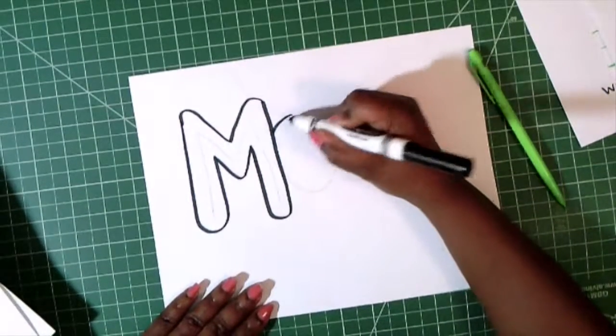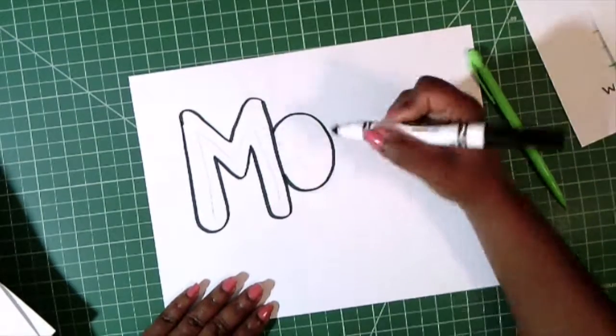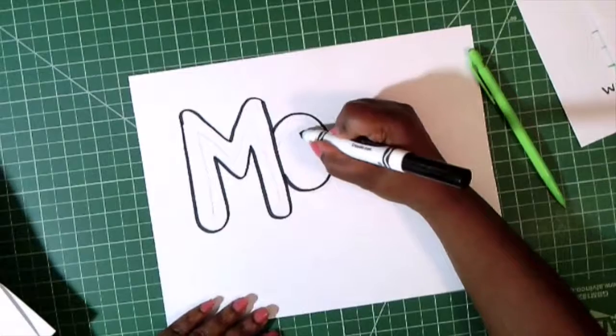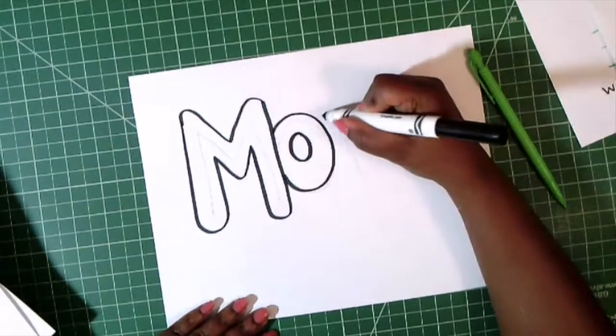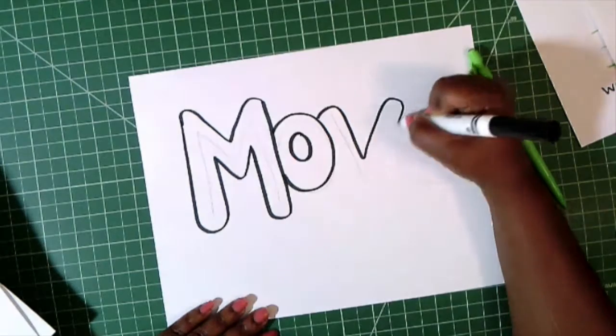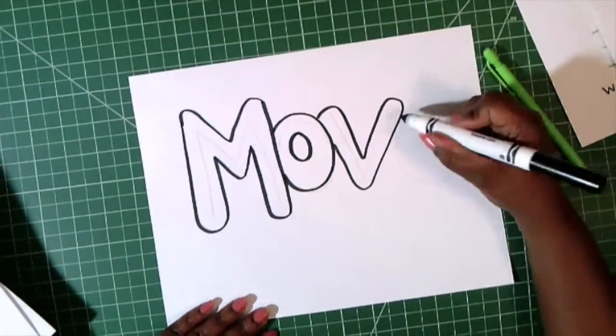Go around my O. And if you want your letters to overlap, you can. If you want them separated, I would suggest that you space your letters out more. M-O-V, down, up, around, and up,